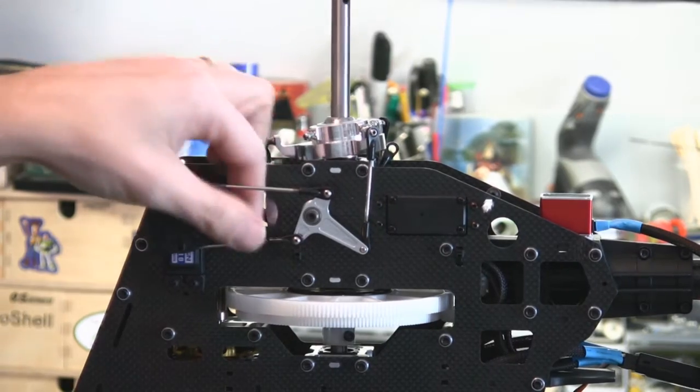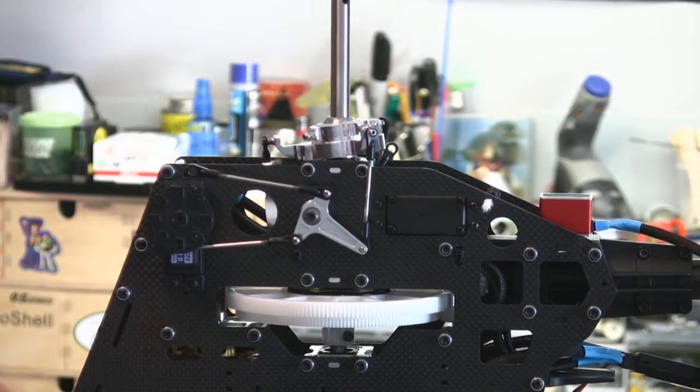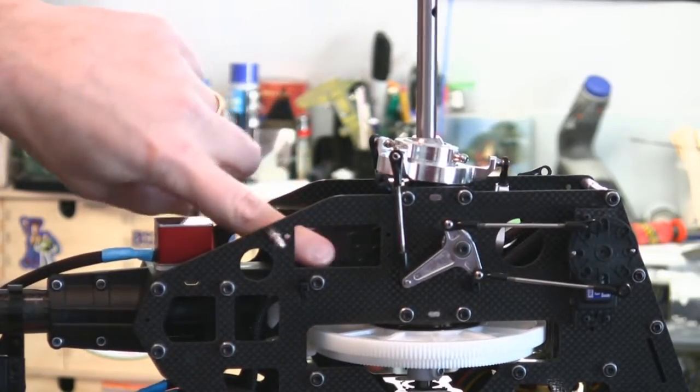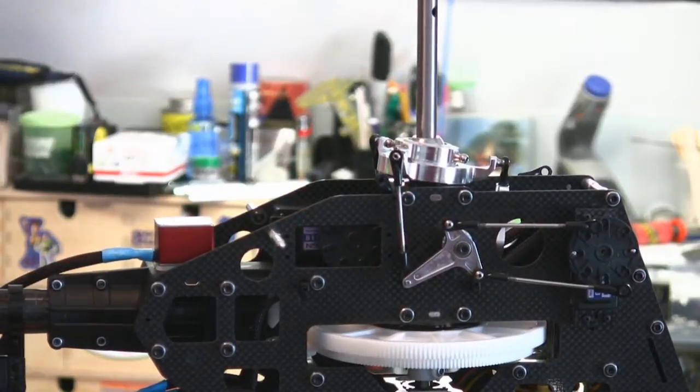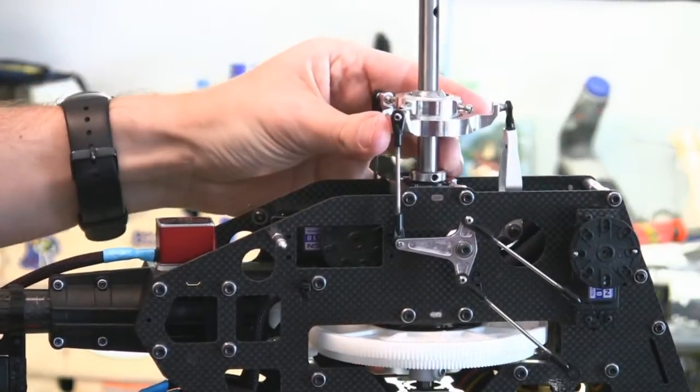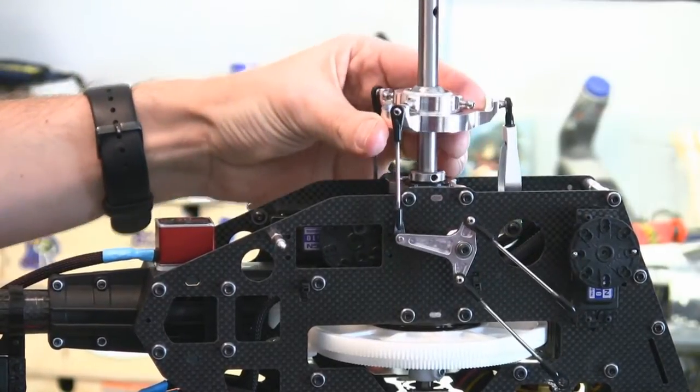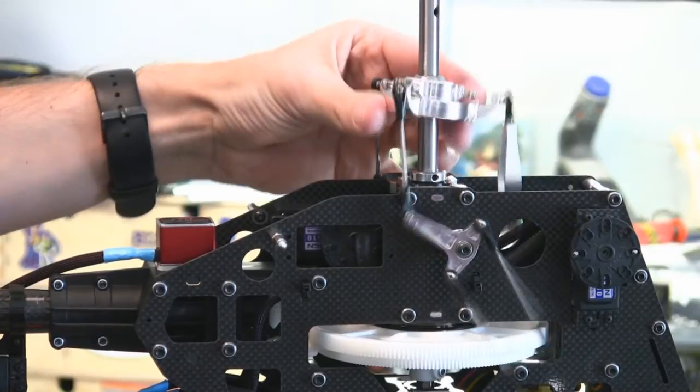Then I can also check the elevator direction. It's kind of hard to see the elevator servo but it's in here. And what I want to do is when I pull back on the elevator stick I want the swash plate to tilt back. And when I push forward on the elevator stick I want it to tilt forwards.